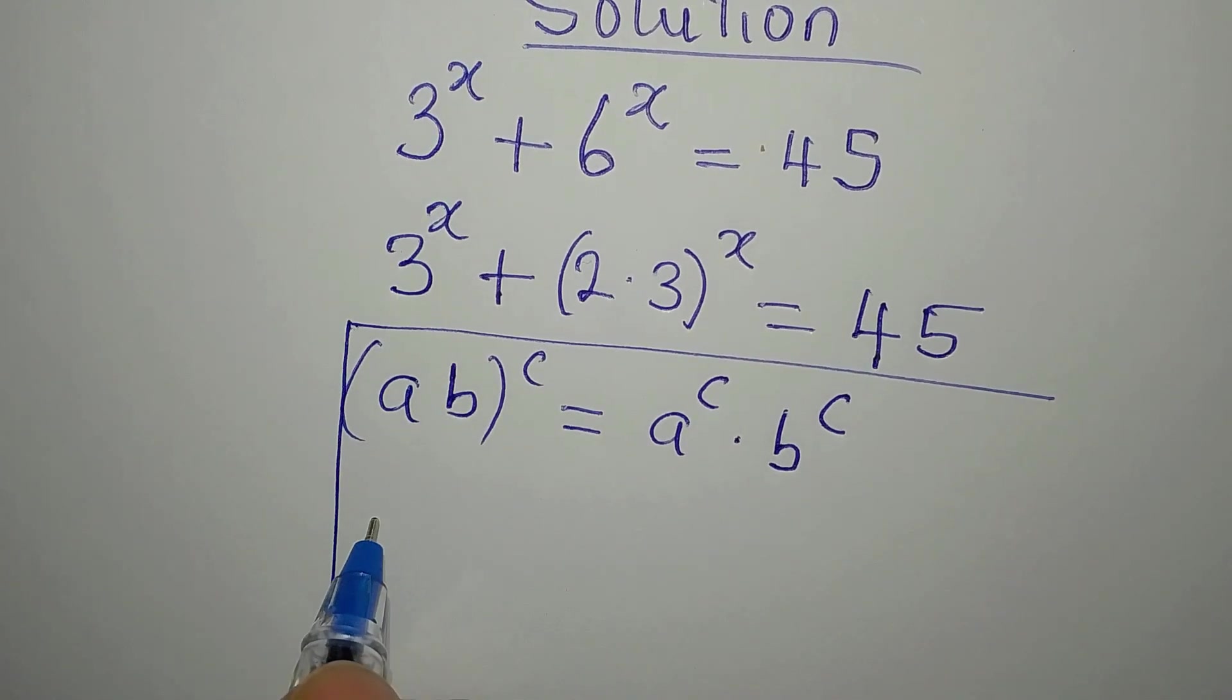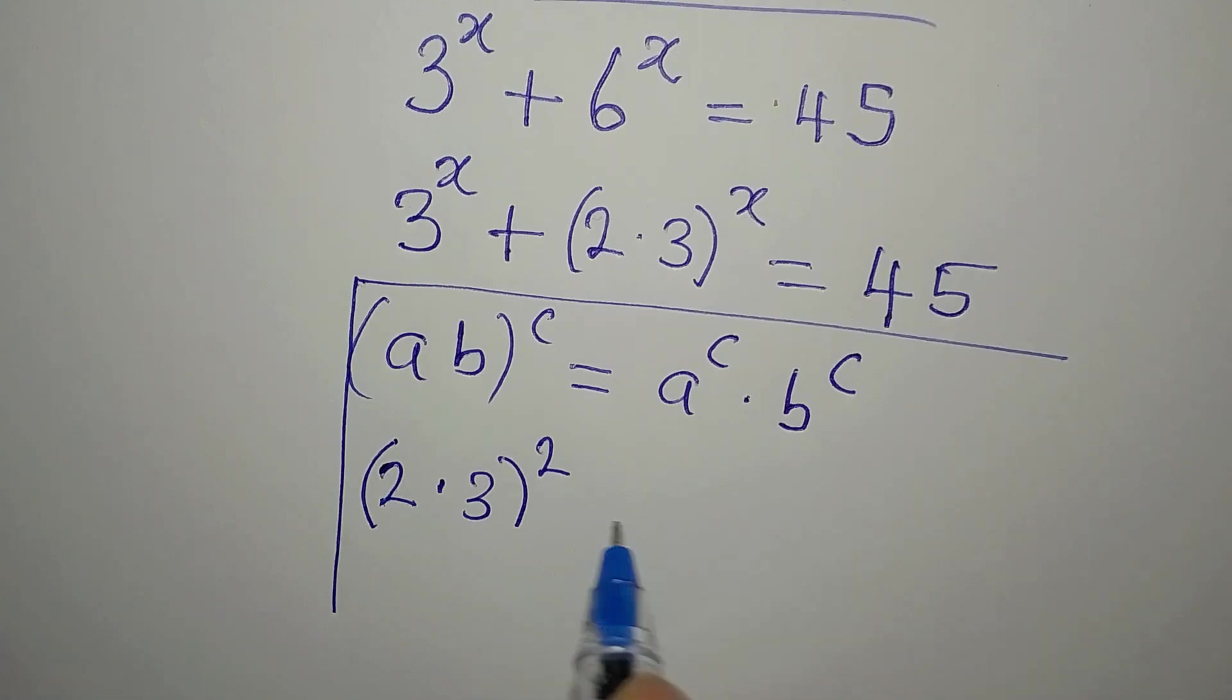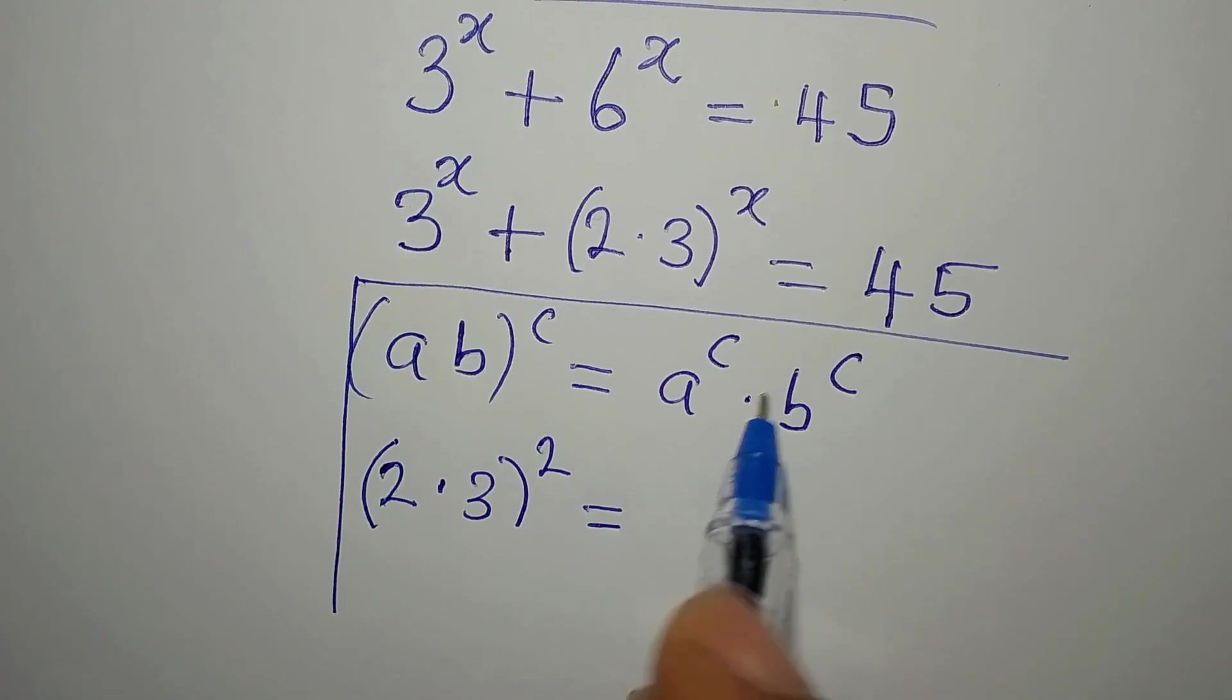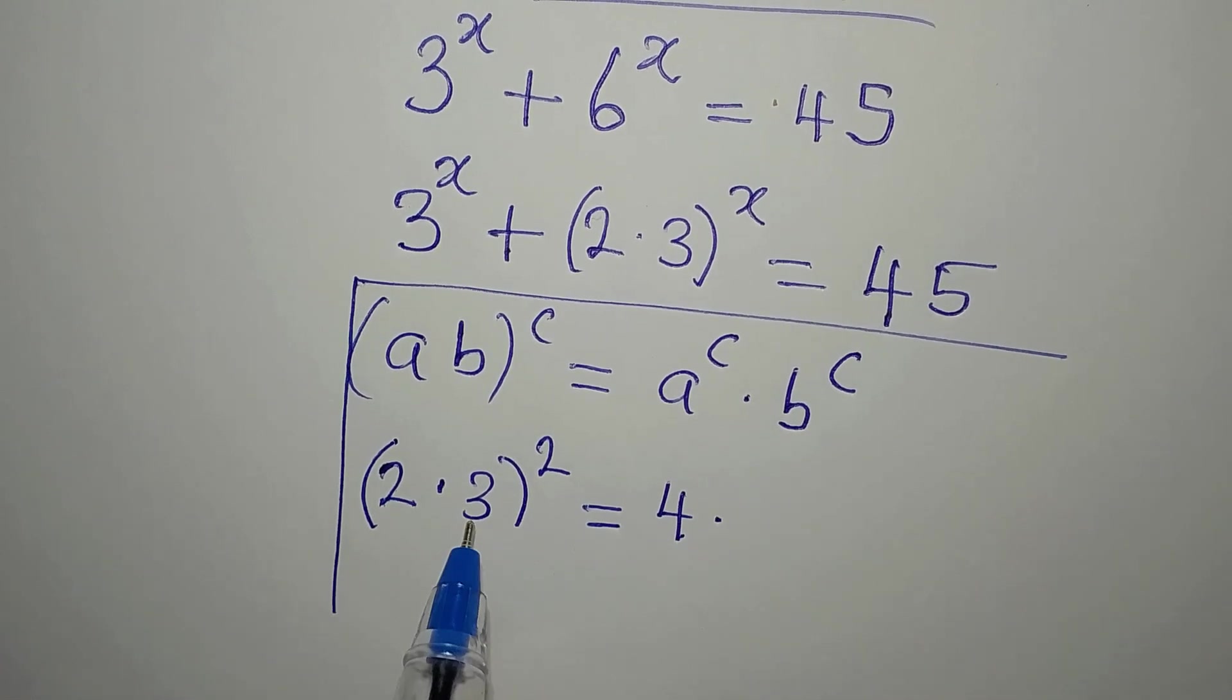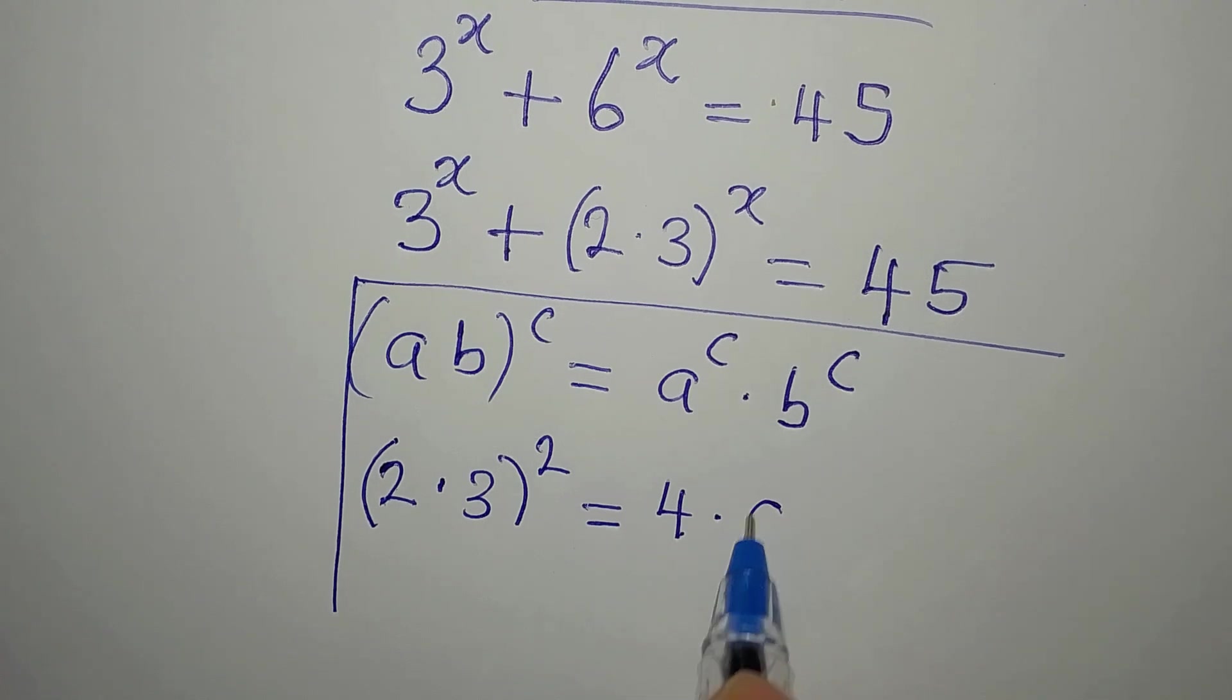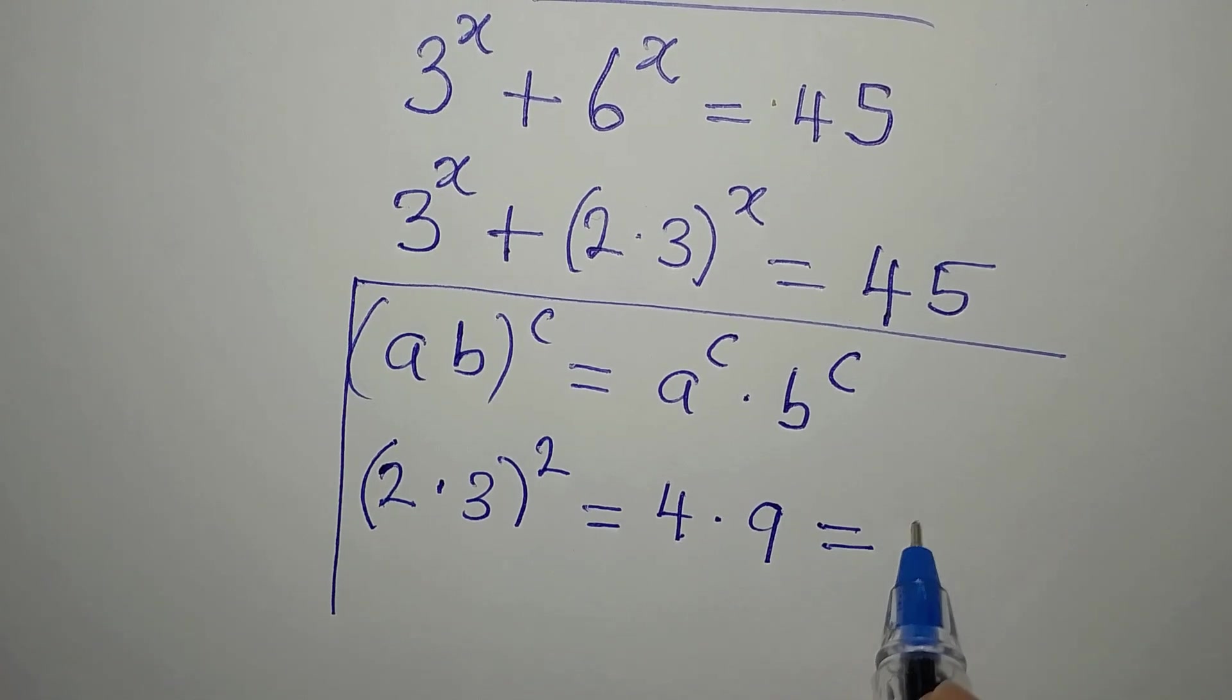Let's say we have 2 times 3 to the power of 2. If I'm going to use this same method, it will be 2 to the power of 2, that will be 4, times 3 to the power of 2, and that is 9. At the end of the day, this is giving us 36.